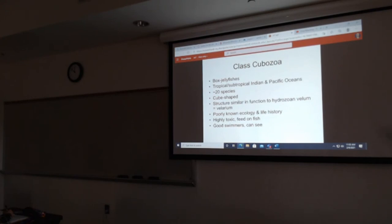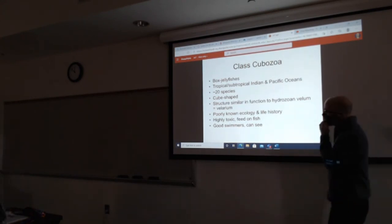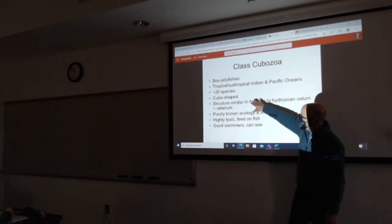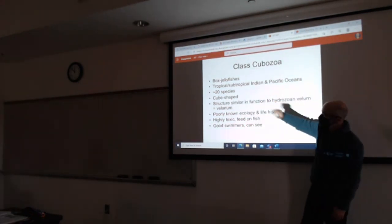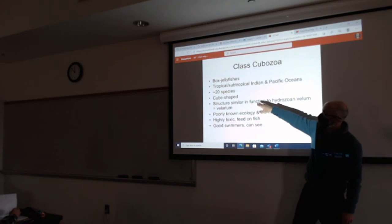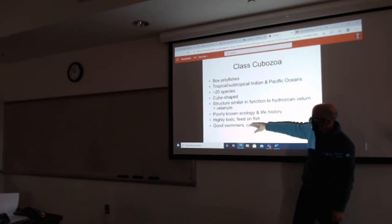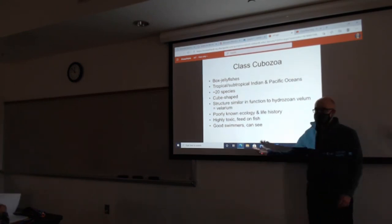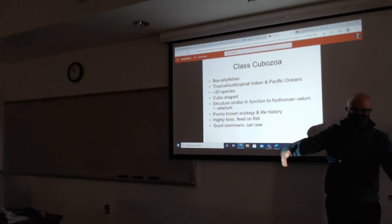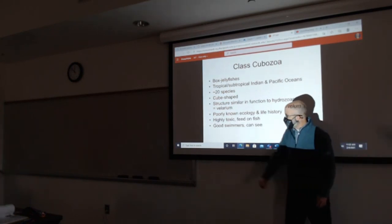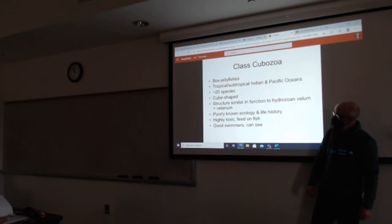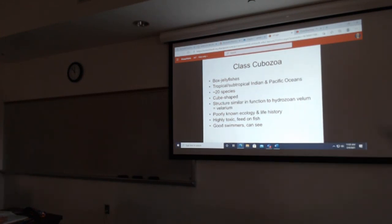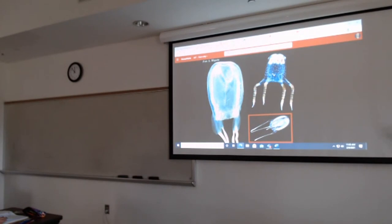The Cubozoans are very unique, the box jellies. They are tropical. They're smallish. There's relatively few species. So out of 11,000 species of cnidarians, there's only about 20 in this class. But they're really special. They basically can actually see and chase down their prey. So they're much more active relative to the other cnidarians that we talked about just sort of planktonic. And they're very toxic. The cnidocytes have very dangerous toxins.